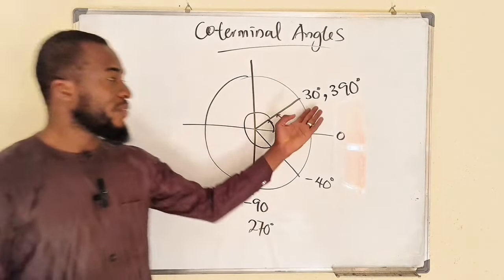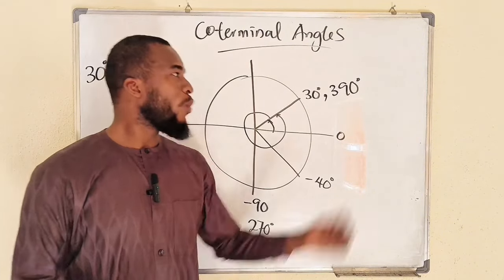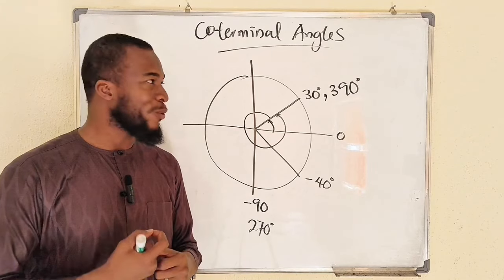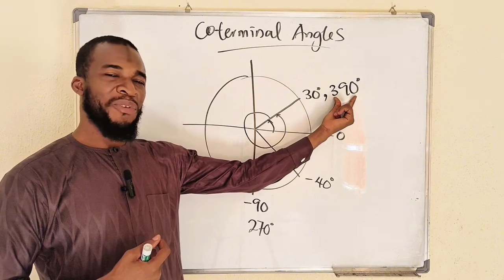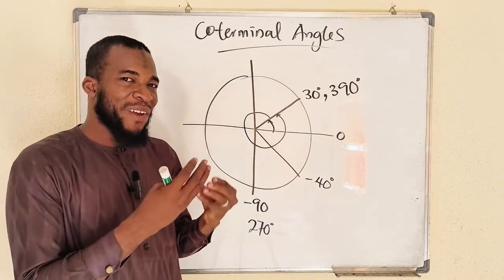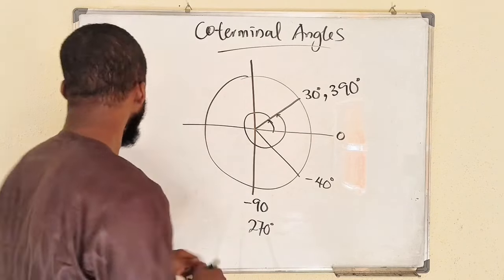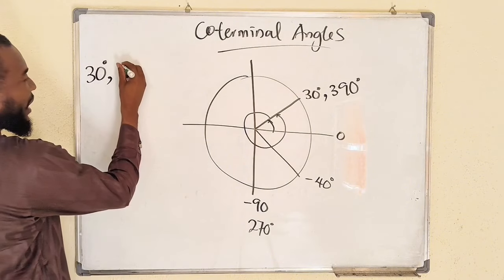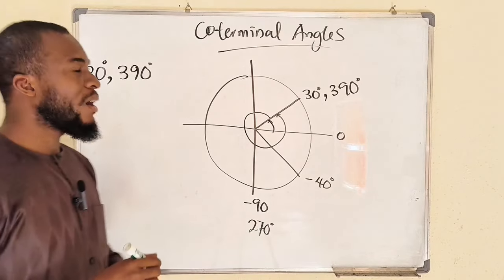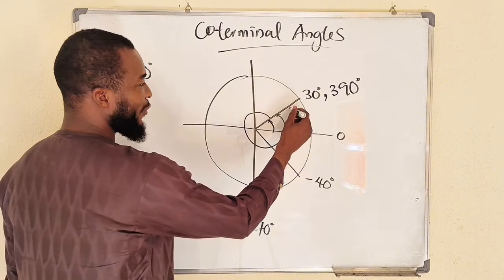All coterminal angles will have the same ratios. Sign of 30 degrees will be the same as sign of 390 degrees. Why do we need coterminal angles? Remember in our previous lesson we talked about reference angles. If you have a large angle, you can subtract 360 degrees to get a smaller angle whose ratio you can easily find — it will be the same thing.